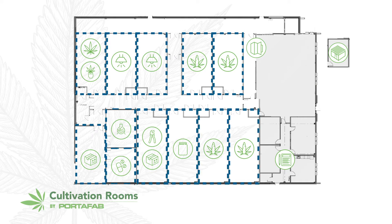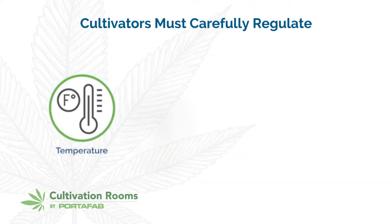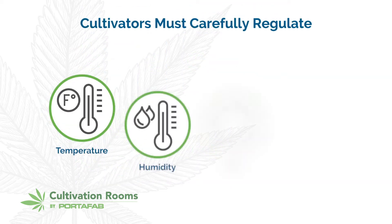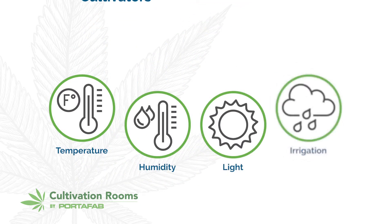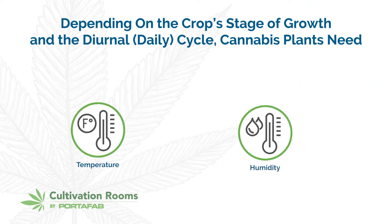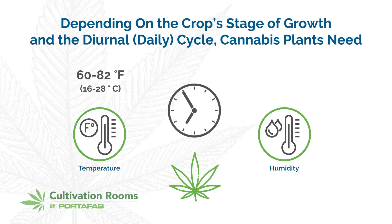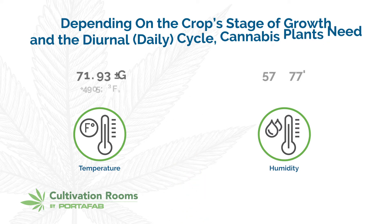In order to create ideal conditions, cultivators must carefully regulate temperature, humidity, light, and irrigation. Depending on the crop stage of growth and the diurnal cycle or daily cycle, cannabis plants need a temperature range of 60 to 82 degrees Fahrenheit or 16 to 28 degrees Celsius and a relative humidity level of 35 to 55 percent.